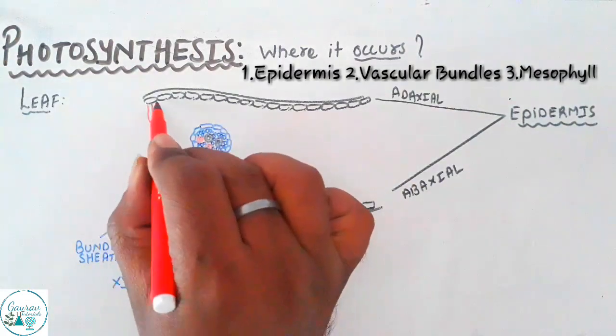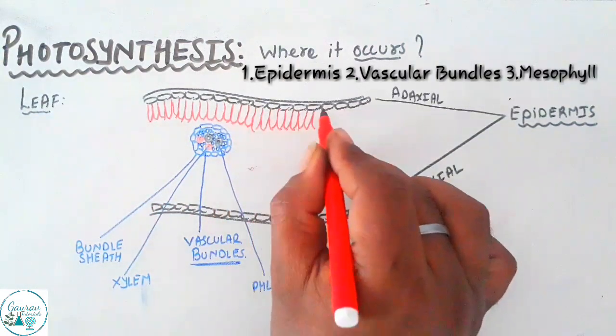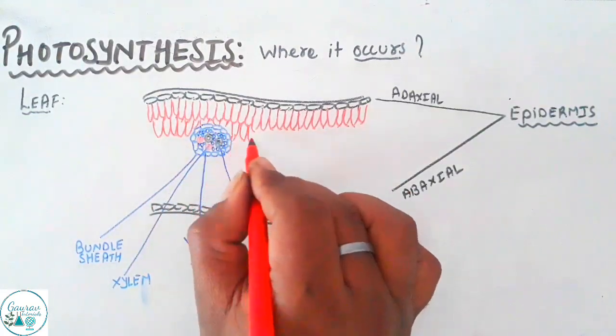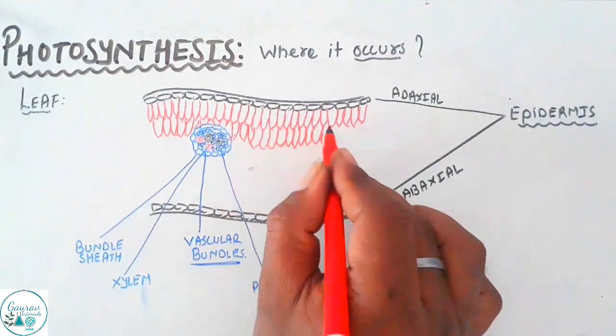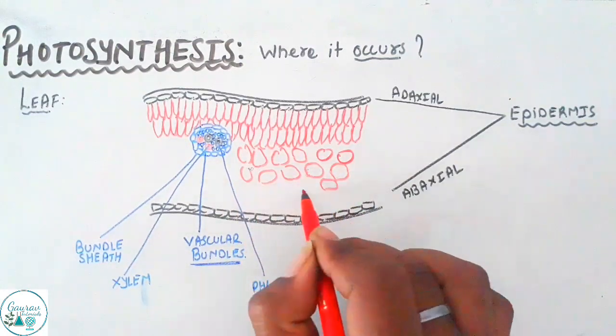In leaves, photosynthesis occurs particularly in the specialized cells which are referred to as mesophyll cells. They contain chloroplasts and are actually the site of photosynthesis.